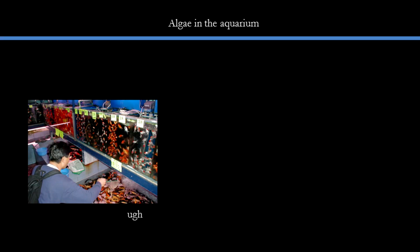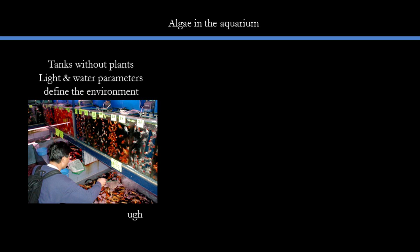Let us start by examining fish-only tanks, the most common type in most pet shops. They contain fish but no plants. Many of them, because of overcrowding and other issues, have high nutrient levels due to fish waste, and yet a lot of them are completely algae-free. This is primarily because of the lack of light — light is the limiting factor. So in low-light tanks, even with relatively polluted water, the tanks can be quite clean of algae. You can easily get green water and other algae blooming in such tanks if you add a strong light.